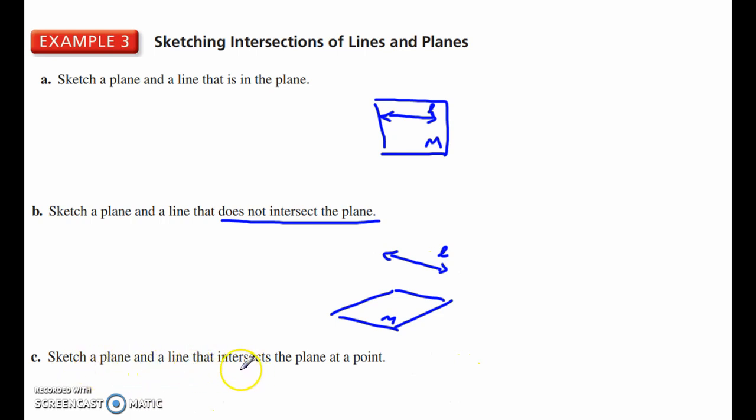Okay, sketch a plane and a line that intersects the plane at a point. Alright, sketch a plane, call this plane M, and then straight through the heart right there. I will dot this to indicate this is going through that plane. So there is line L. The intersection is right here, this point.